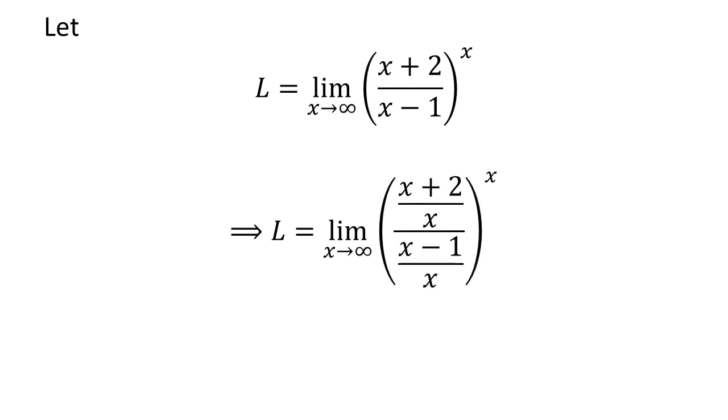As multiplying the numerator and the denominator of a fraction by a common factor does not change the value of the fraction, let us multiply the numerator and the denominator by 1 upon x.